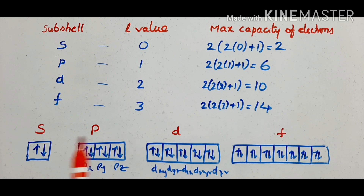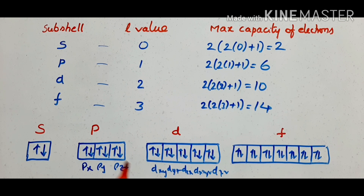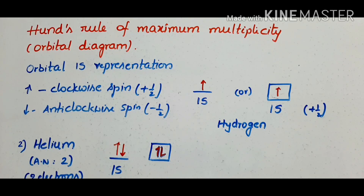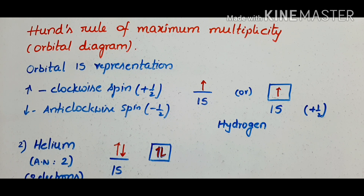This is all about Pauli's Exclusion Principle, which determines the maximum number of electrons in a subshell. The conclusion is that the maximum number of electrons in each subshell is determined by 2(2L + 1).